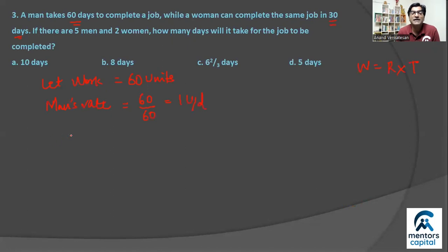Whereas woman's rate, let's call them M and W, so W will be, if a woman can do 60 units in 30 days, then she is doing 2 units every day. So man and woman's rates we got.